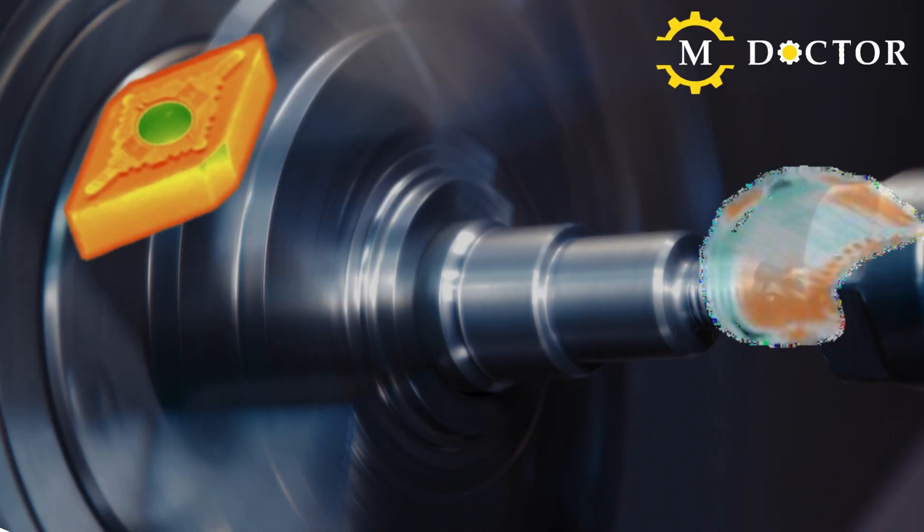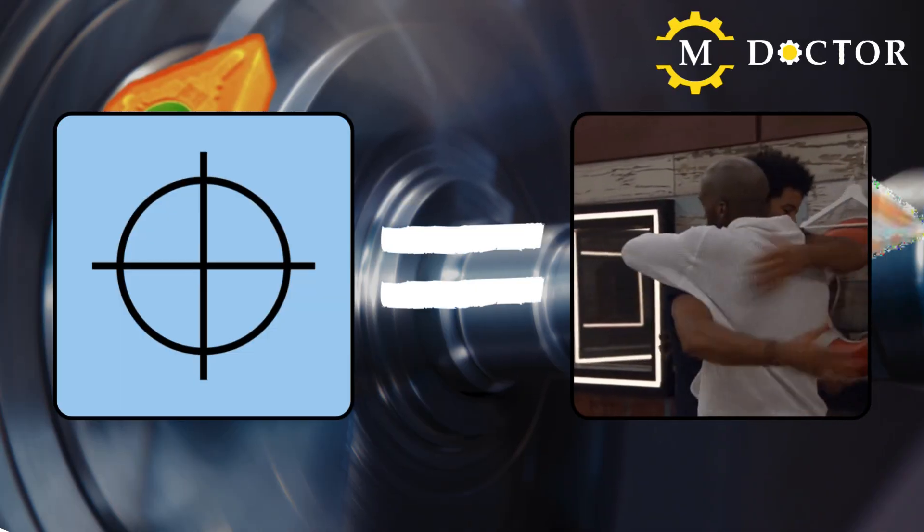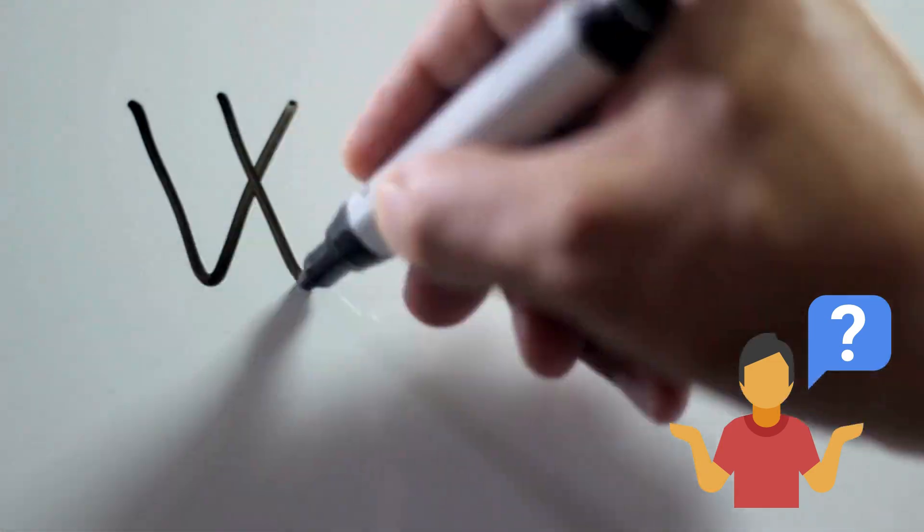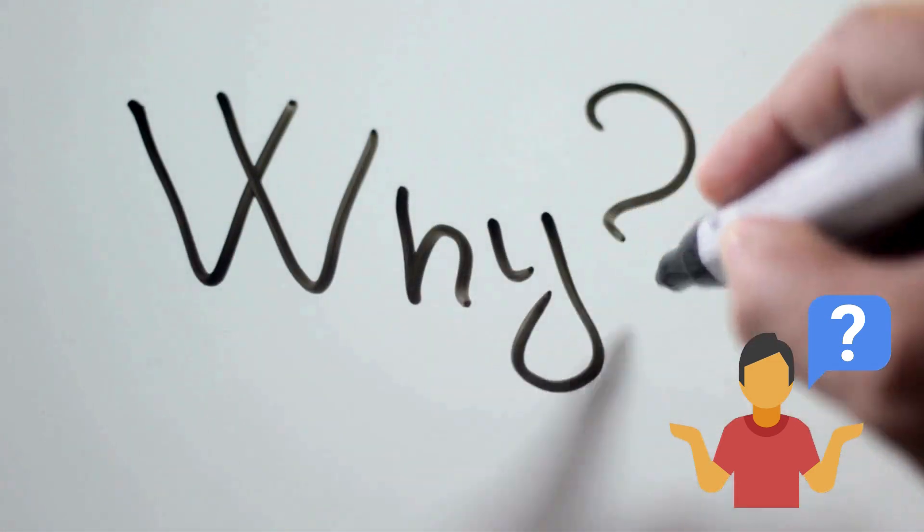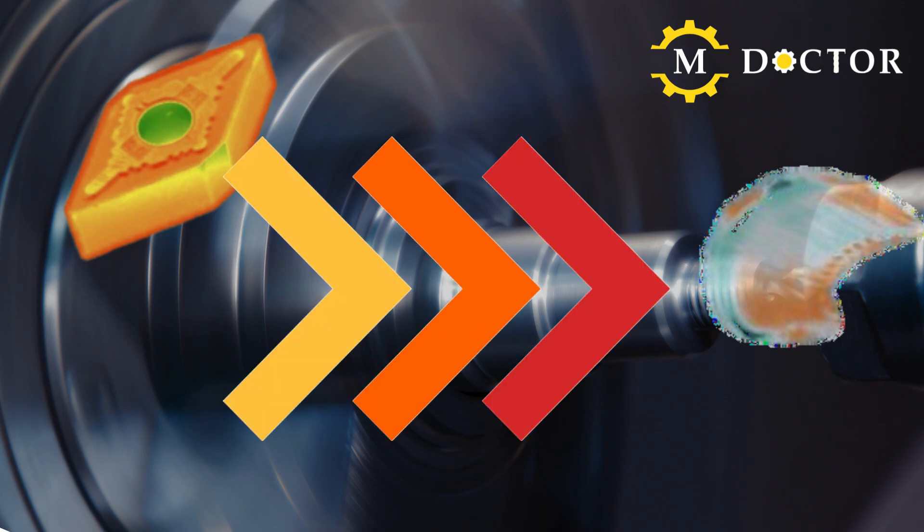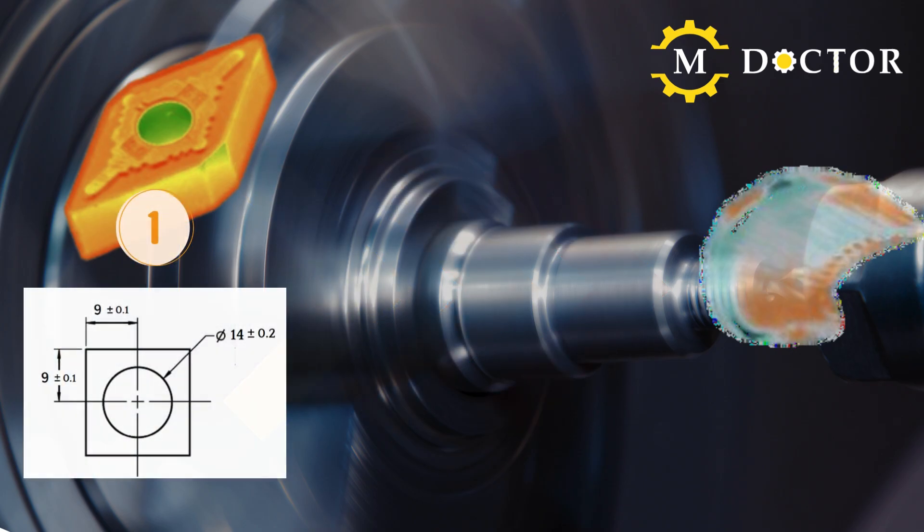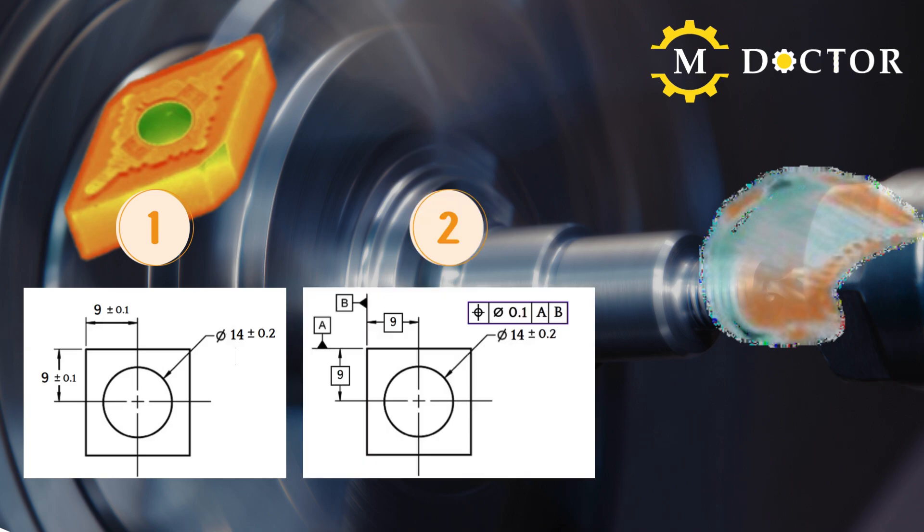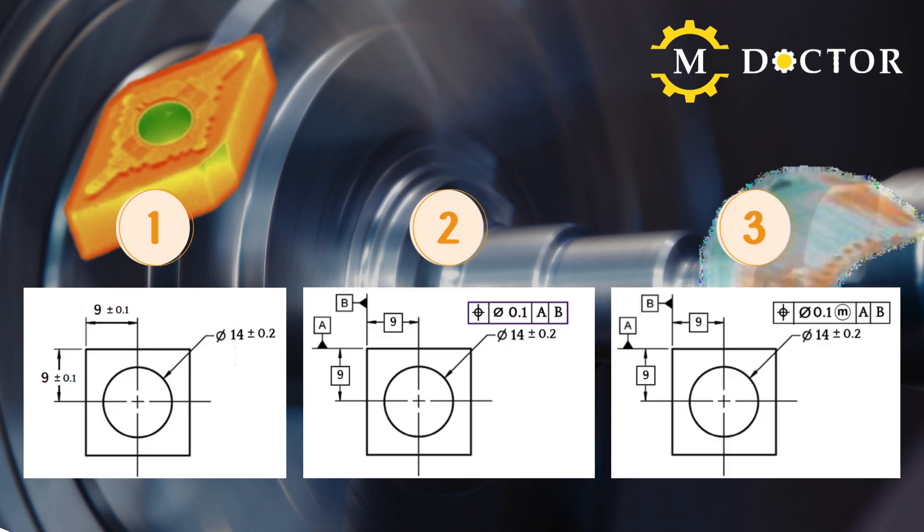We started this video by saying that the position tolerance is our friend. Let's understand why by looking at a practical example. We will explore the same drawing in three variations: conventional tolerance, position tolerance, and position with maximum material condition.